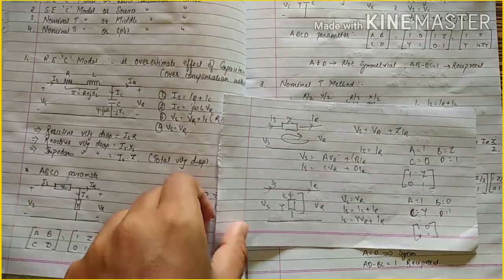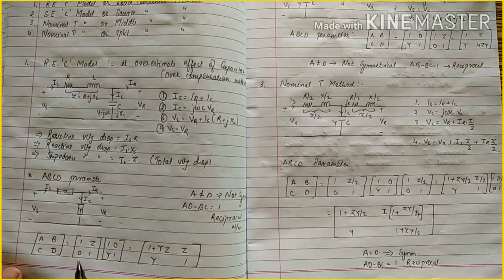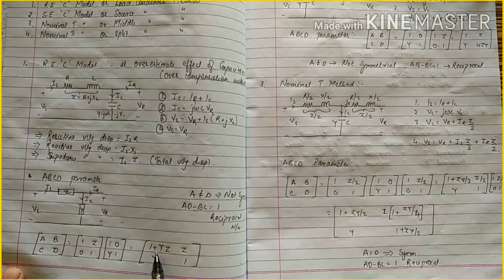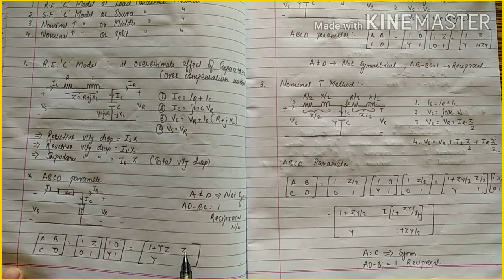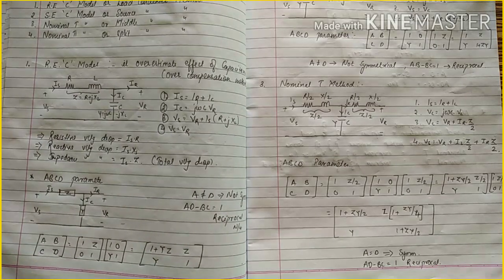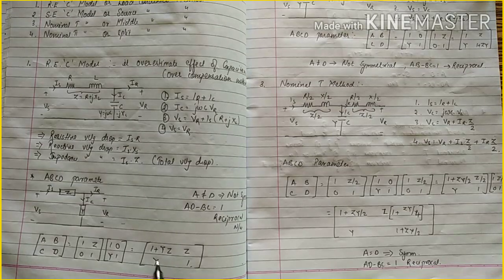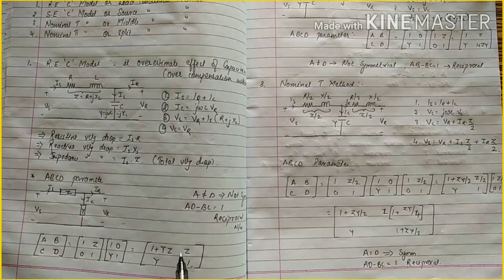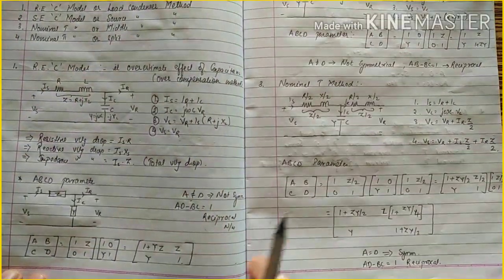Multiplying the two matrices [1, Z; 0, 1] and [1, 0; Y, 1], we get the combined ABCD matrix. The result is: A equals 1 plus YZ, B equals Z, C equals Y, D equals 1. From the matrix you can see that A is not equal to D, so this is not symmetrical. However, AD minus BC equals 1, which means it is reciprocal.